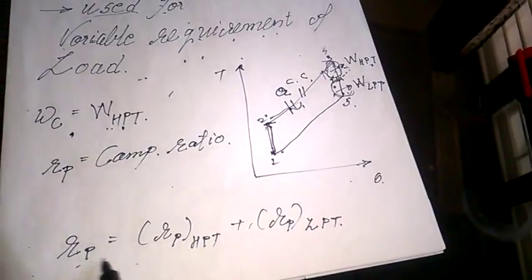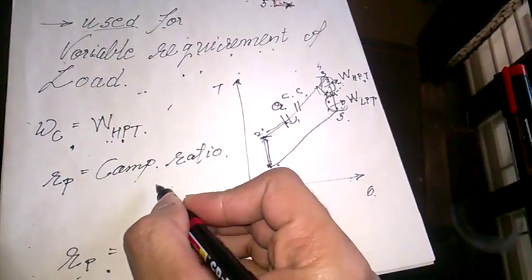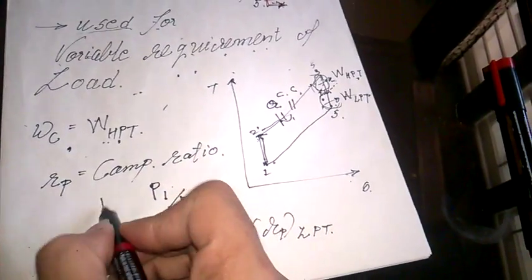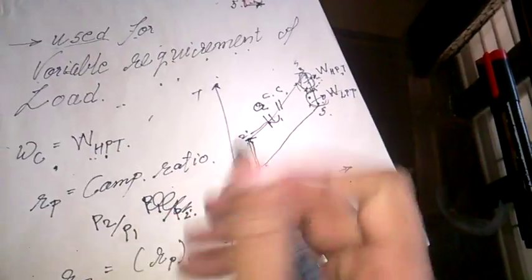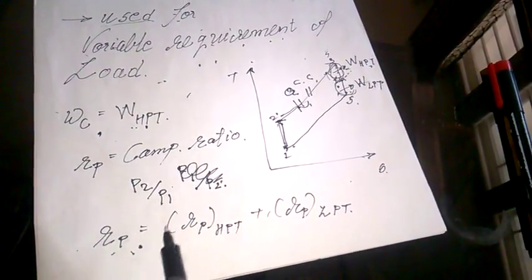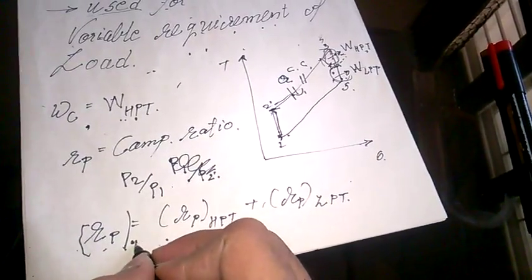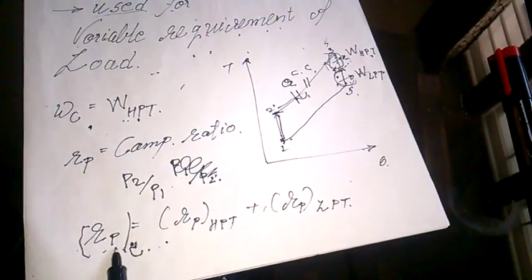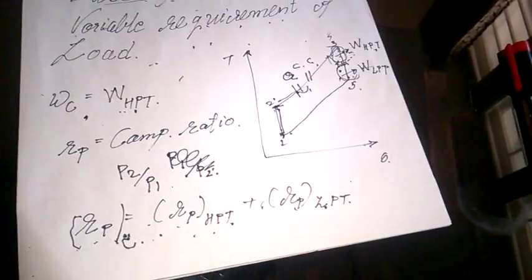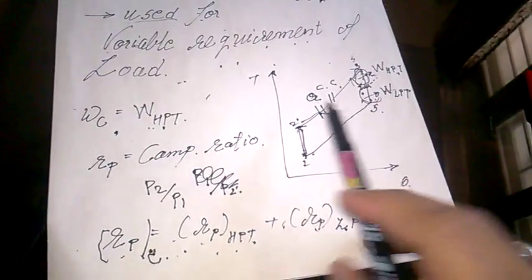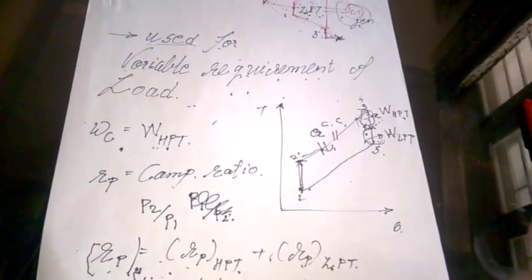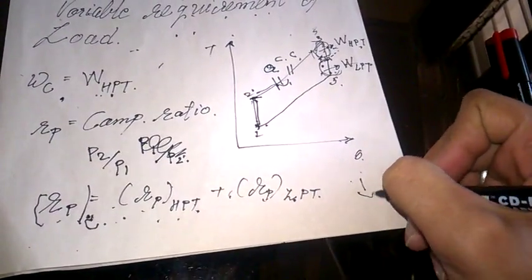The compression ratio rp is the pressure ratio p2 by p1. The rp of the compressor equals the rp of the high pressure turbine plus the low pressure turbine. This is the key relationship to keep in mind because the free shaft turbine works on the Joule cycle. That's it for the free shaft turbine — I hope you liked the video, thanks for watching, and have a great day.